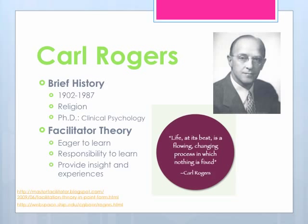Carl Rogers was born on January 8, 1902, in Illinois, just outside Chicago. His father was a civil engineer and, like Skinner, his mother stayed home. Interestingly, Carl Rogers moved right to the second grade because he could already read before kindergarten.